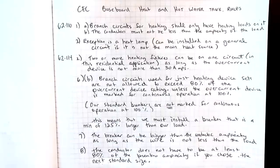Rule 62-114 Subrule 2 tells us that two or more heating fixtures can be on one circuit. For your assignment in this residential application, we have a limit of a maximum overcurrent device of not more than 30 amps.